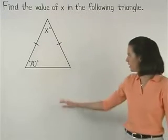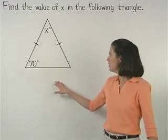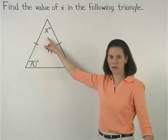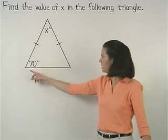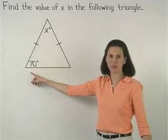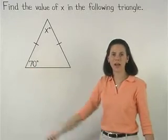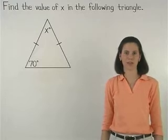So let's say we're given an isosceles triangle with a vertex angle that measures x degrees and a base angle that measures 70 degrees and we're asked to find the value of x.